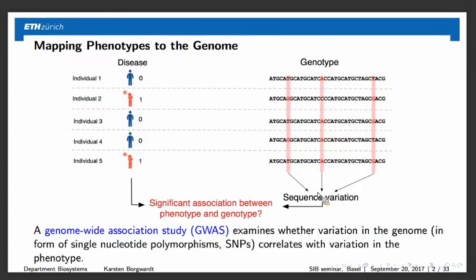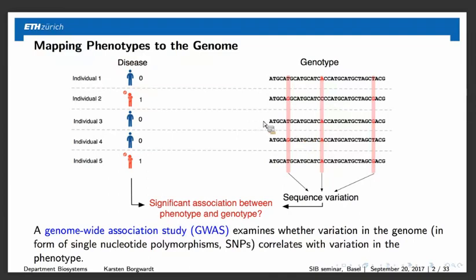In a genome-wide association study, we are given a pool of individuals — in this toy example only five individuals. For these, we have phenotypic information; in a medical or clinical setting, this is often the disease status, whether the person is a case or a control, shown here in red and blue. We also have genetic information about these individuals. The most common form of genetic properties are so-called SNPs, single nucleotide polymorphisms — single bases that differ between the genomes of different individuals.